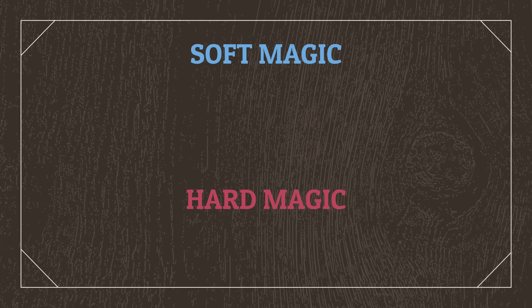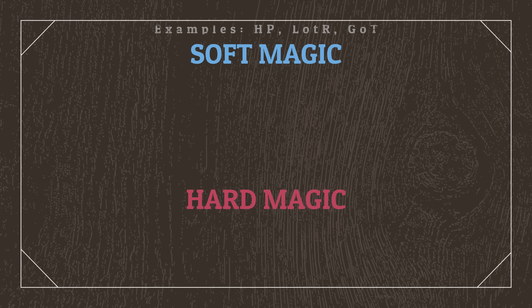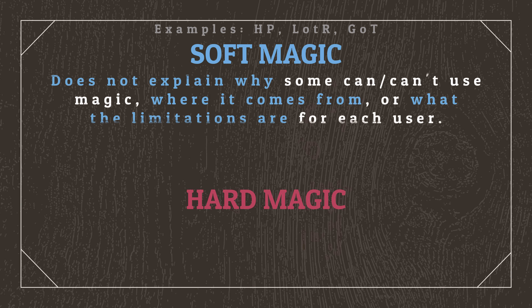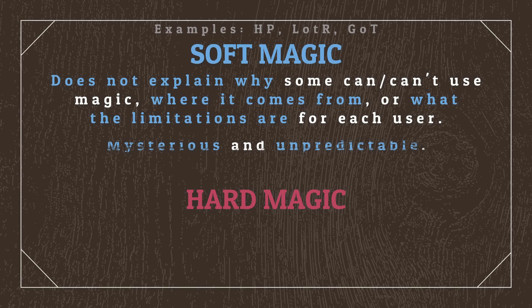This is where the concepts of soft and hard magic come in. What I've described in Harry Potter is a soft magic system, where concepts like why some individuals can or can't use magic, where the magic itself comes from, and most importantly, what the limitations of magic are for each individual, aren't explained. This doesn't necessarily mean that these rules aren't present behind the scenes, but rather that they're not overtly shown or described and are therefore mysterious and unpredictable. By providing minimal or no explanation, your explanation can't be wrong.